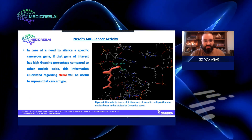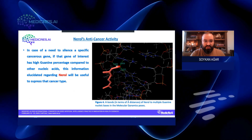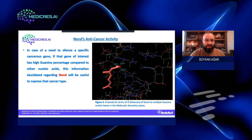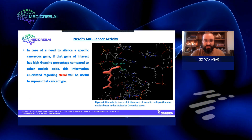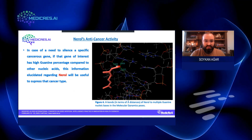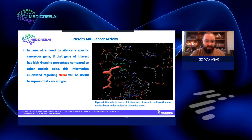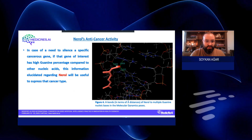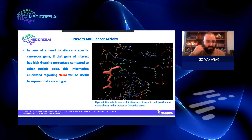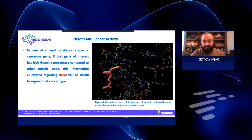In case of a need to silence a specific cancerous gene, if that gene of interest has a high guanine percentage compared to other nucleic acids, this discovery is quite useful, since it will be able to suppress that cancer type.